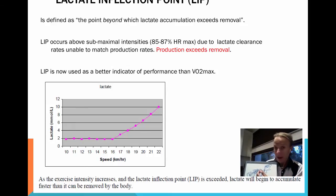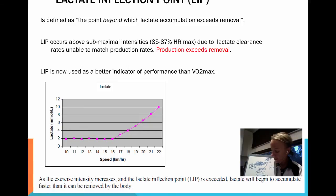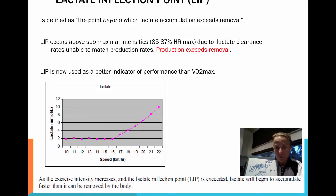The accumulation of lactate coincides with the accumulation of hydrogen ions, and that makes our muscles very acidic, which interferes with muscle contraction — not good. The intensity at which this occurs, where accumulation exceeds how quickly we can remove it, is at about 85 to 87 percent of heart rate max — you're on the verge of not being able to keep going for much longer before you fatigue.